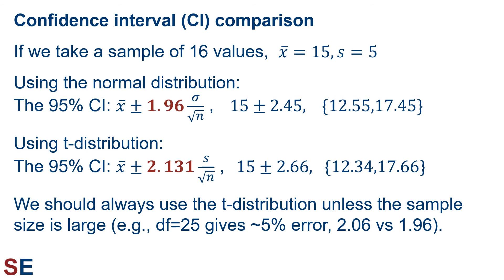For example, if we had 25 degrees of freedom, the width of our 95% confidence interval from the t distribution would be 2.06 standard errors versus 1.96 from the normal distribution. This is a difference of about 5%, which means that if we use the normal distribution instead of the t distribution, our interval would be 5% too narrow. A 5% difference can be meaningful, especially if we're working with important data.